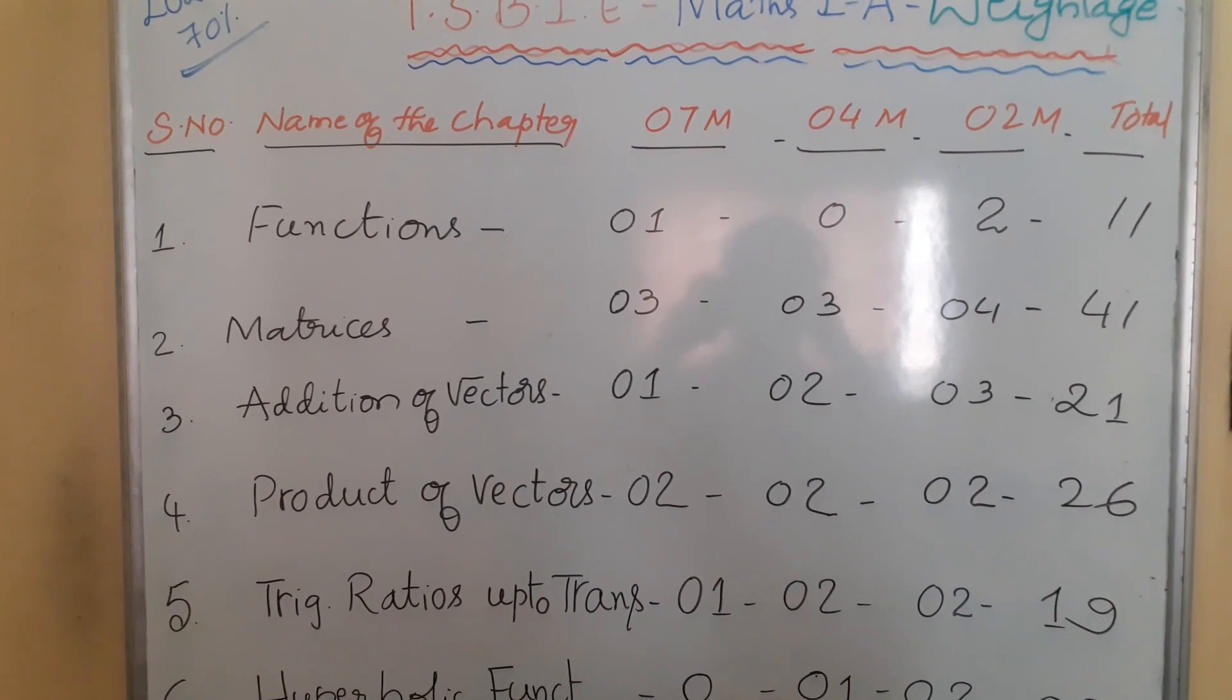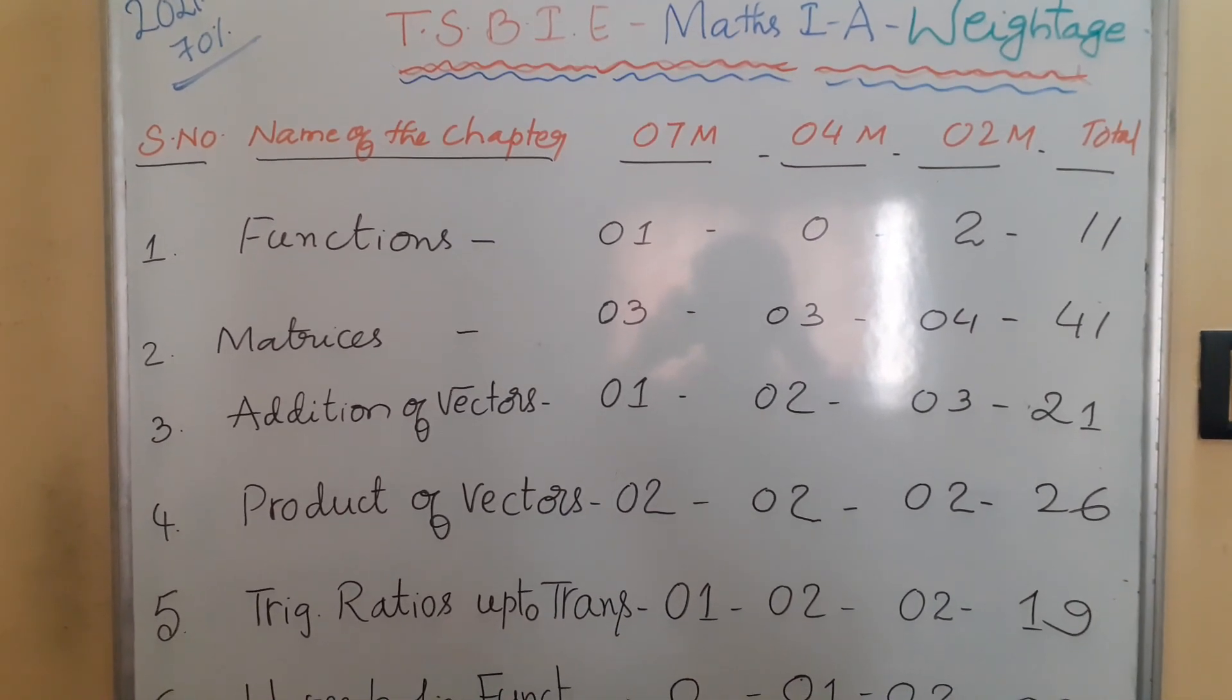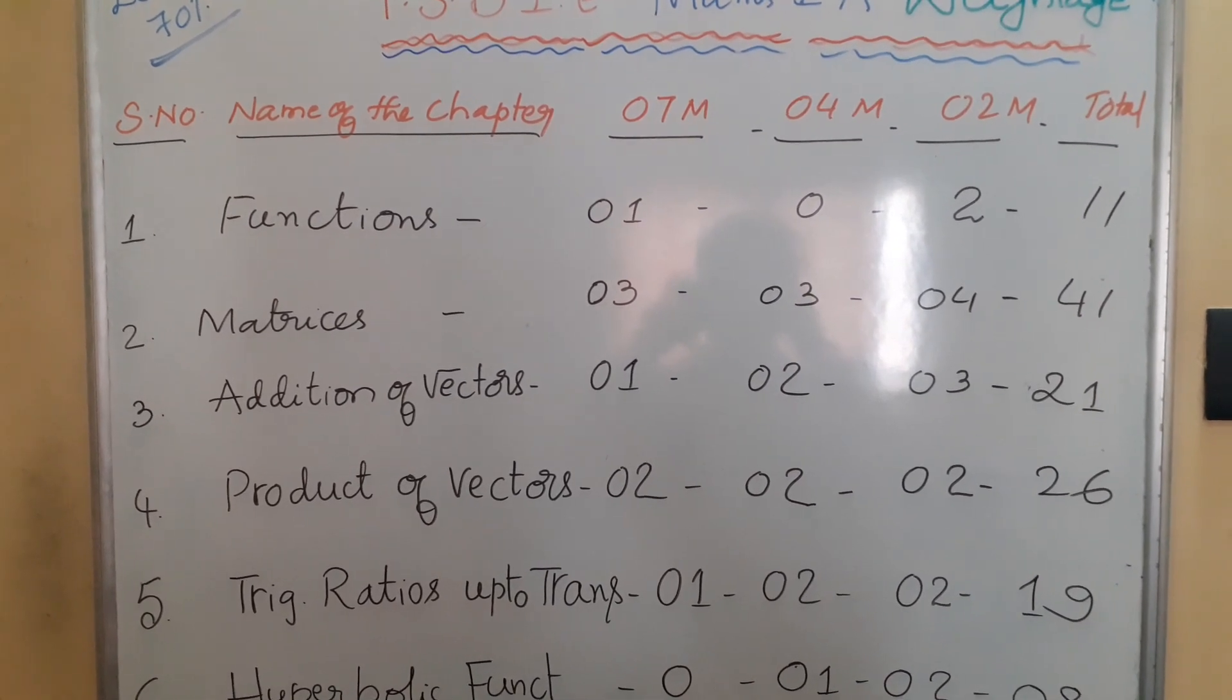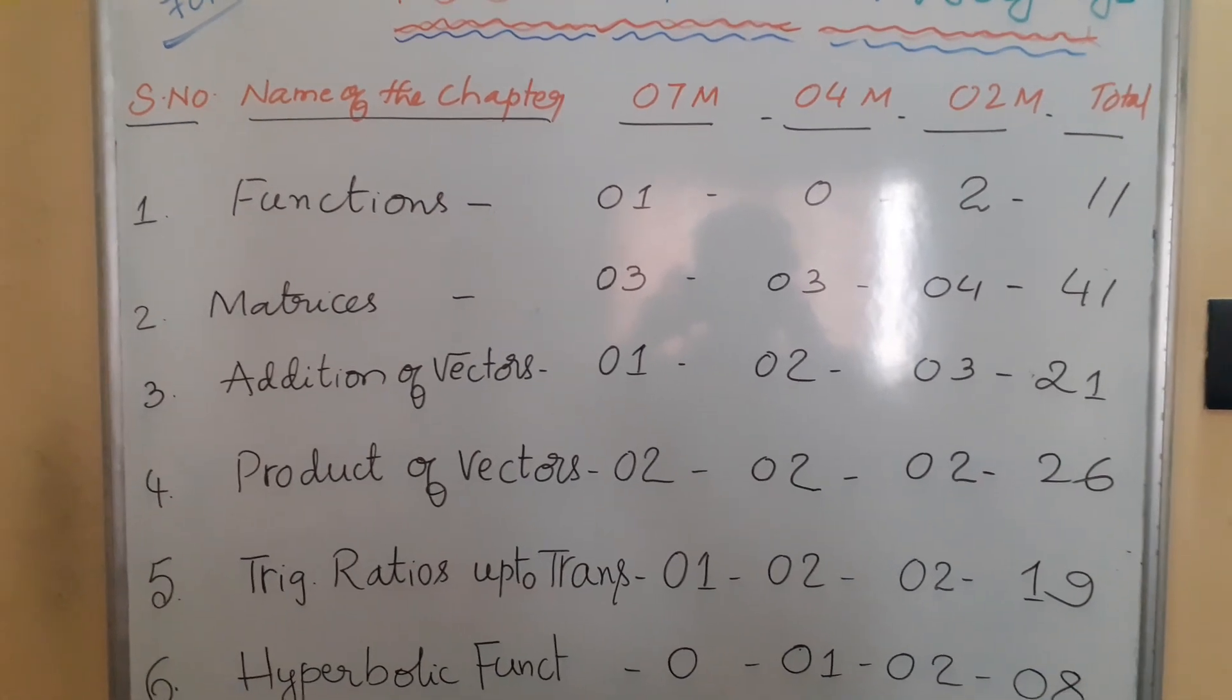The first chapter is Functions. In Functions, one 7-mark question will be coming, zero 4-mark questions, two 2-mark questions. Total weightage is 11 marks for the first chapter.